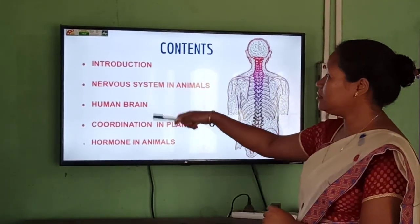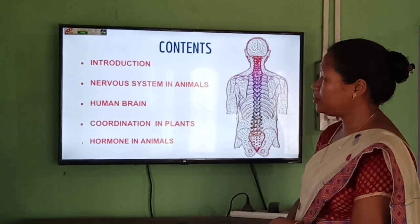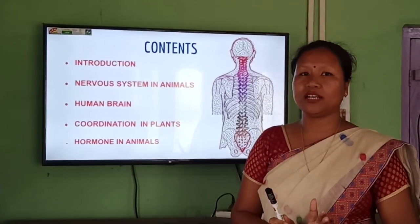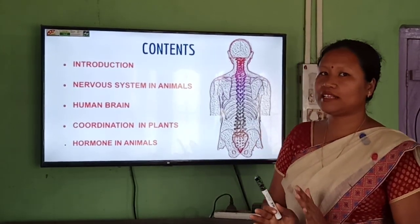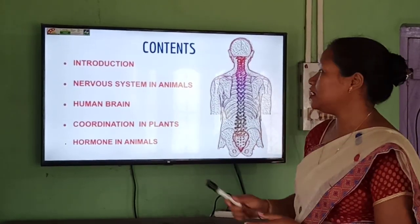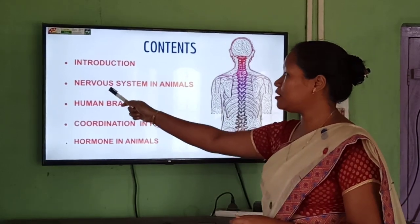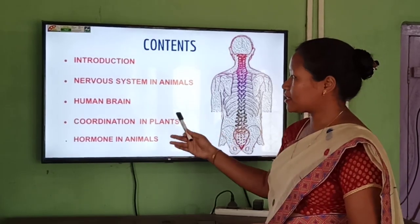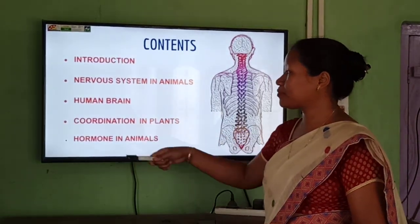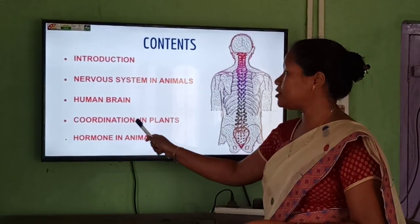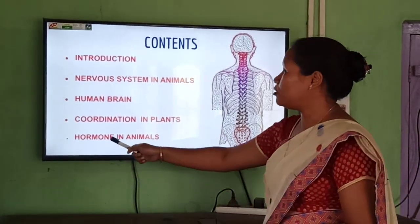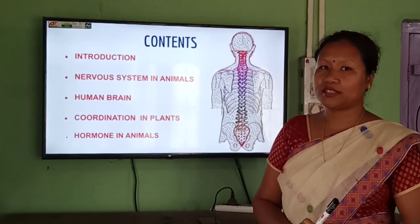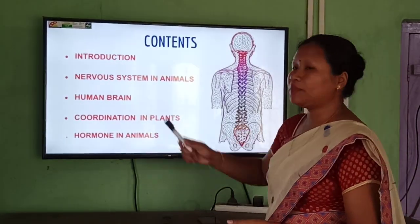As you have seen, the chapter is a very big one, so I have divided it into four sections — each section will be one class. The first class will be on the nervous system in animals, which we are going to discuss today. The second class will be on the human brain, the third on coordination in plants, and the fourth on hormones in animals. So today we are going to discuss the nervous system in animals.